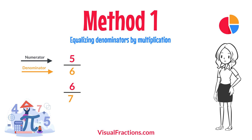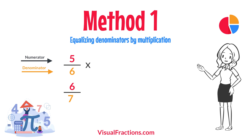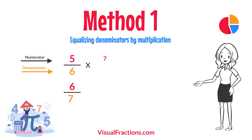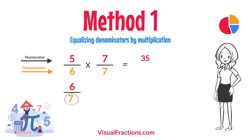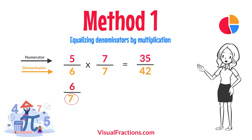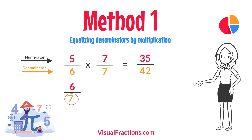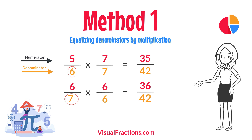For 5 sixths, multiply both the numerator and the denominator by 7, the denominator of 6 sevenths. This gives us 35 forty-twos. For 6 sevenths, multiply both the numerator and the denominator by 6, the denominator of 5 sixths. This results in 36 forty-twos.